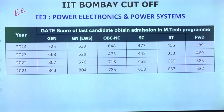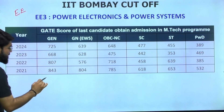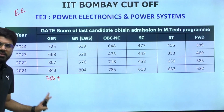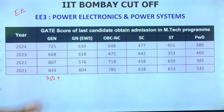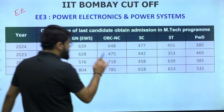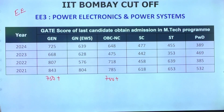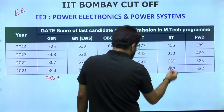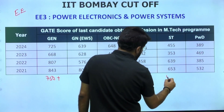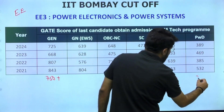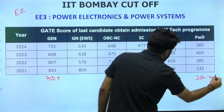For Power Electronics and Power Systems — primarily recommended for Electrical Engineering students — 750+ in general is a very safe call; it can go as high as 850. For OBC Non-Creamy Layer, 700+. For SC, 450+; ST, 400+; and PWD, around 350–400. I'd encourage students in those ranges to go ahead and fill the form.